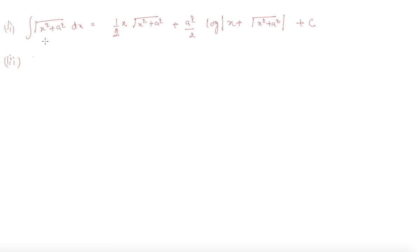And the third one is root a square minus x square plus a square by 2 sine inverse x by a. The difference between these two formulas in place of logarithmic here is the inverse sine term. This is all about integrals of some more types.